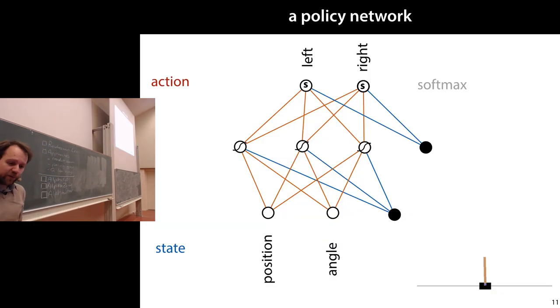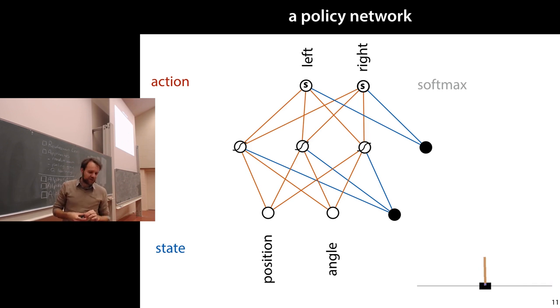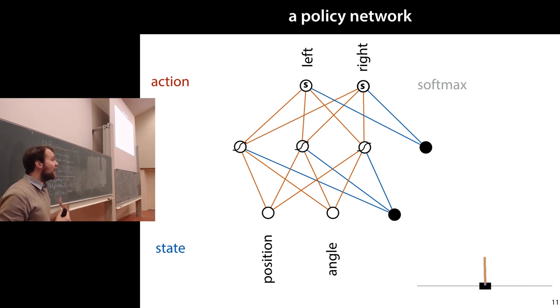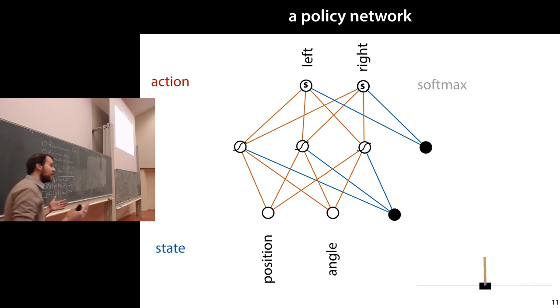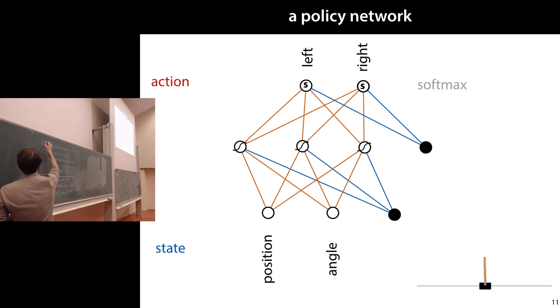The nice thing is that this policy — the mapping from states to actions that the learner learns — was a deep neural network. They look at the screen, add some convolutional layers, and output a probability distribution over the actions. They managed to train this neural network to learn these kinds of games. That's really what people mean when they talk about deep reinforcement learning: reinforcement learning combined with a deep neural network.